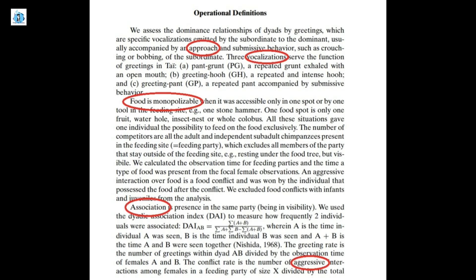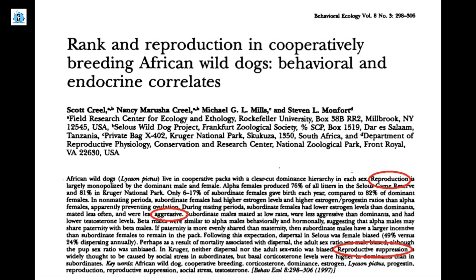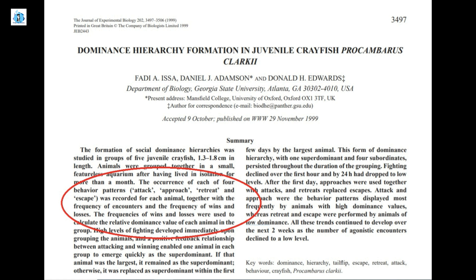For the chimp study, the researchers looked at how they approached each other and what types of vocalizations they made. They also looked at food monopolization, association behaviors, and aggressive interactions. Another study using African wild dogs looked at rank mainly as a measure of whether reproductive suppression was happening, with the idea that high-ranking members were the ones actively reproducing. Another paper looked at dominance hierarchy in juvenile crayfish, using attack, approach, retreat, and escape as the behaviors indicating dominance or submission.